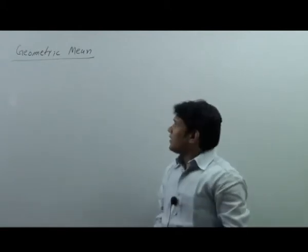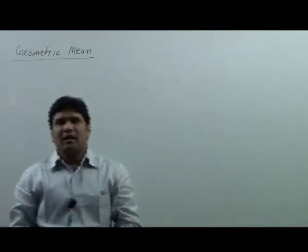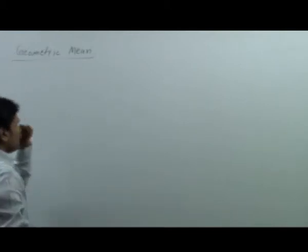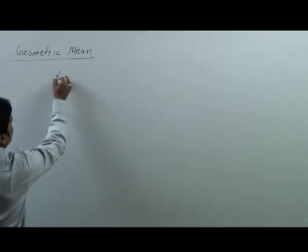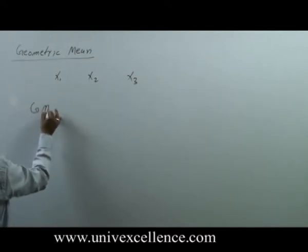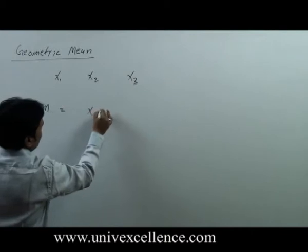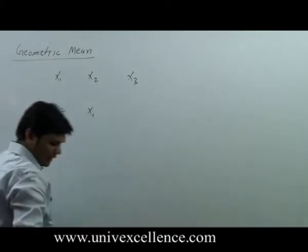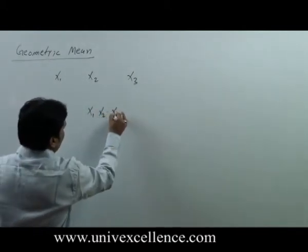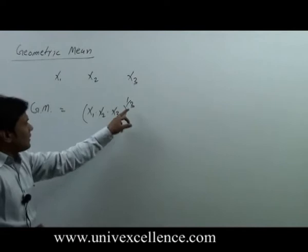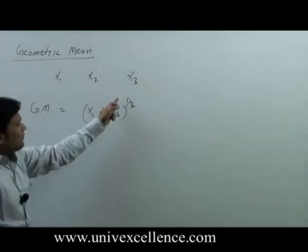Geometric mean is the nth root of the product of observations. For example, suppose there are three observations x1, x2, x3. Then the geometric mean is given by Gn equals x1 multiplied by x2 multiplied by x3 to the power 1 by 3. So in this case, when there are 3 observations, that would be the third root of the product of three observations.